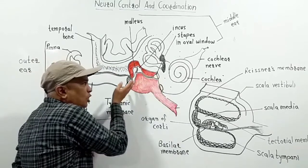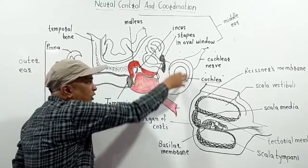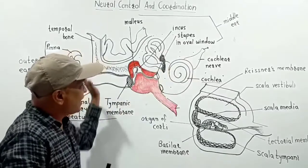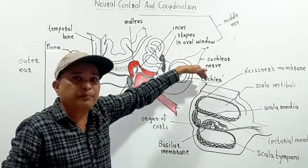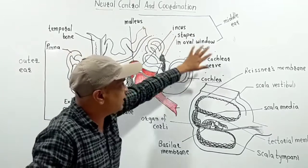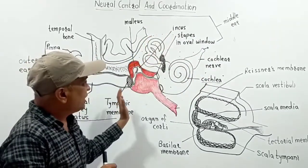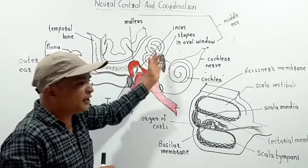These stapes open as an oval window in this cochlea. Now these waves are transmitted into the inner ear. The inner ear is completely filled with a fluid called endolymph. Now these waves are transmitted into the endolymph.